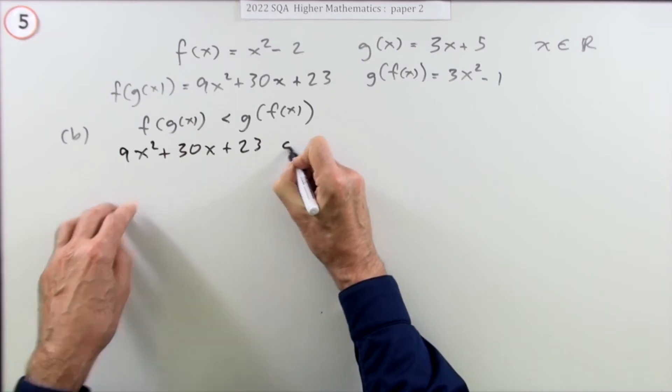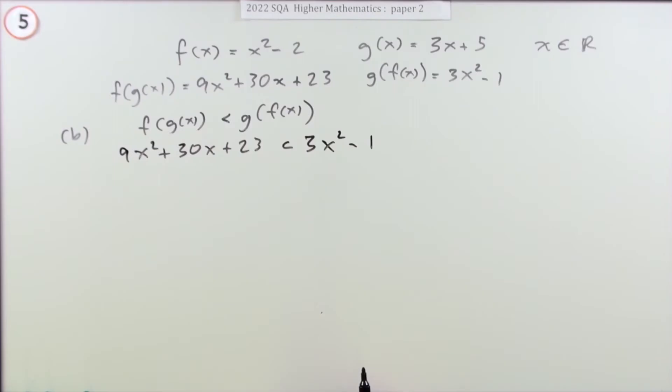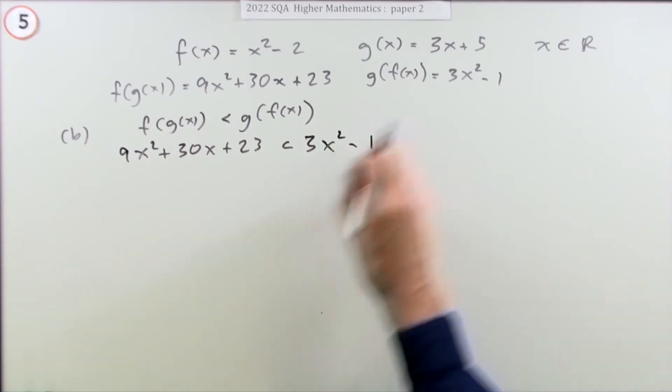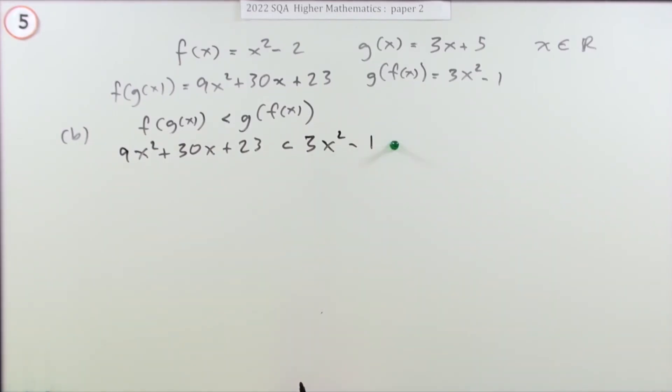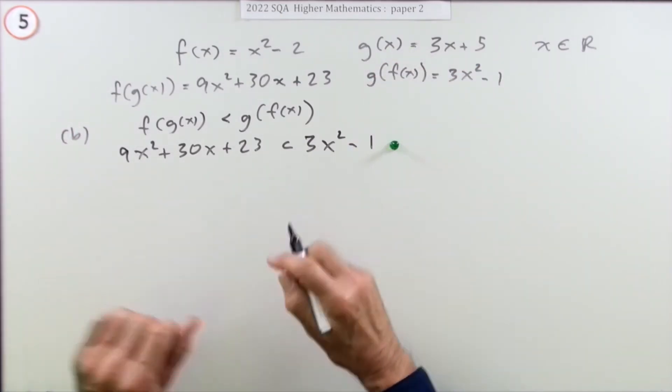is less than 3x squared minus 1. Writing that down gets the first mark. If you hadn't done it in part A, you'd have to do it here to get that mark. So it all balances out.